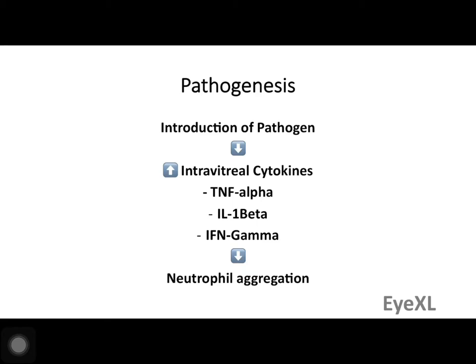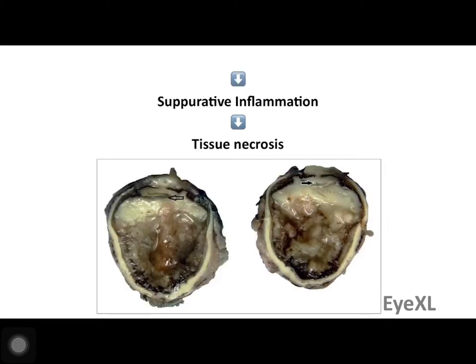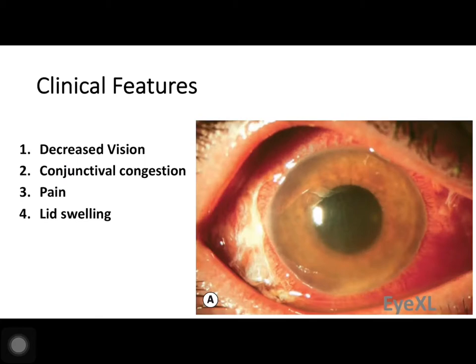Pathologically, the organism enters the vitreous cavity, causing an increase in intravitreous cytokines such as TNF-alpha, IL-1 beta, and interferon-gamma. This is followed by neutrophil aggregation, which leads to suppurative inflammation and then tissue necrosis. In the histopathology images shown, the left image shows a shiny disc-like structure — the intraocular lens implanted after cataract surgery — in a case of post-cataract acute postoperative endophthalmitis. The right image shows the haptic part of the IOL.